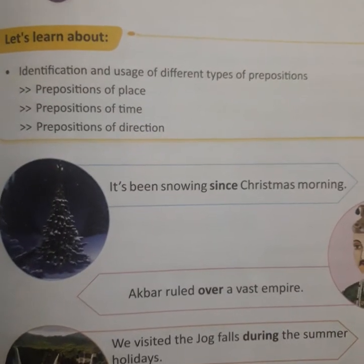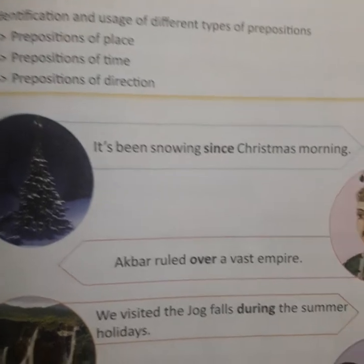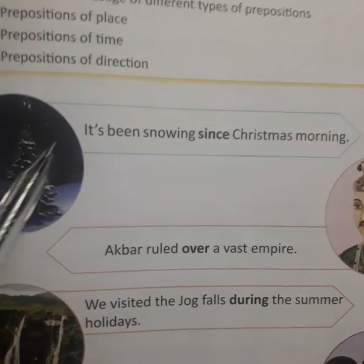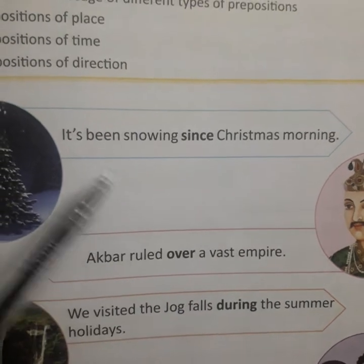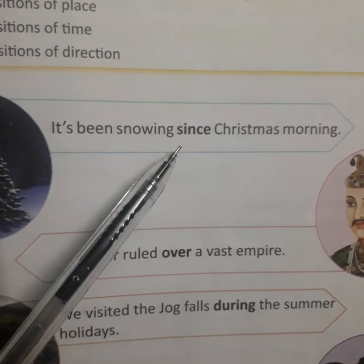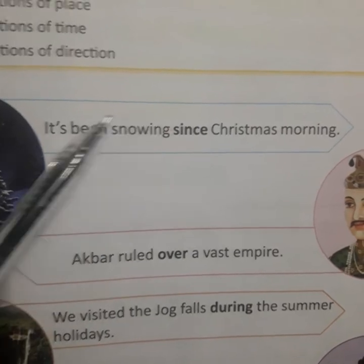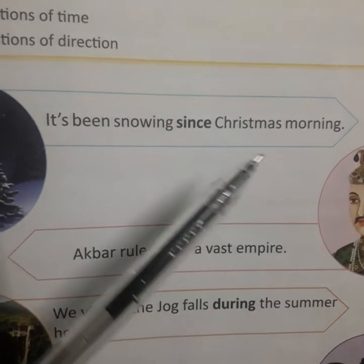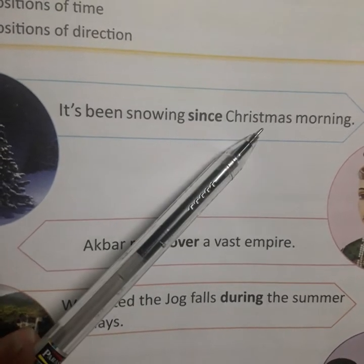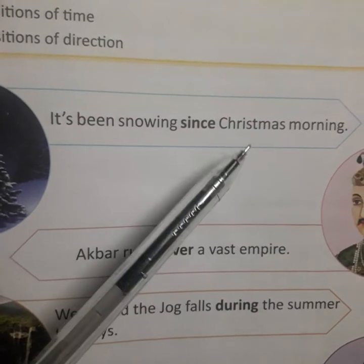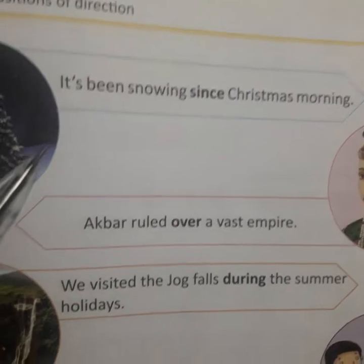तो, वो हमारी prepositions थे. Now, see this sentence. For example: 'It's been snowing since Christmas morning.' So, 'since' is a preposition here — it is connecting this with Christmas morning. ये इसका link बता रही है, इन दोनों का आपस में relationship, इन दोनों को connect कर रहा है ये word 'since'. So, this is a preposition.